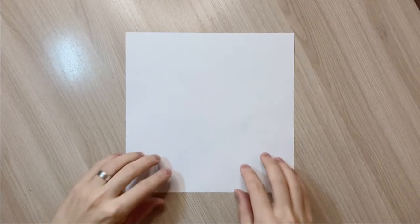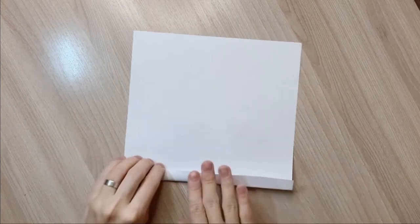So you're gonna take your square sheet of paper and if it's two-sided you're gonna place your main color facing you. Then you're gonna fold a narrow strip of paper at the bottom.